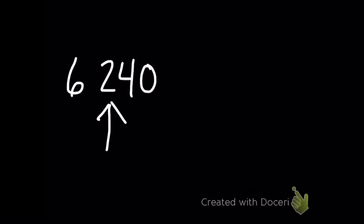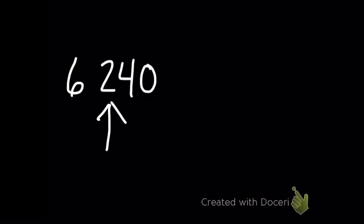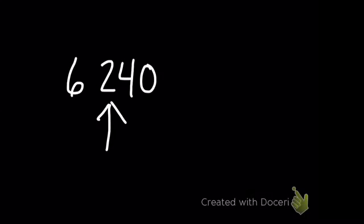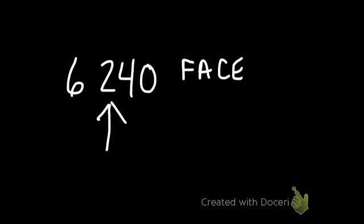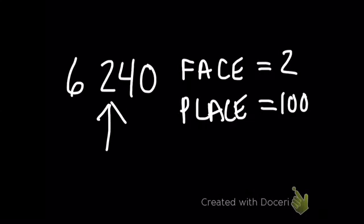Let's say we have a number like 6240 and we want to find the total value of the indicated digit — in this case, where the arrow is pointing. So we first find its face value, which is basically the actual digit between 0 and 9. In this case, it happens to be 2. Then we look for the place that it sits in the number — this is the place value — and the 2 is sitting in the hundreds place value.